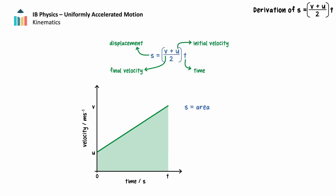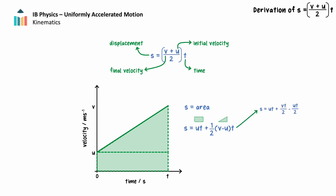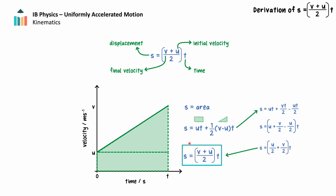For the graph shown here, the area can be divided into a rectangle and a triangle. The area of the rectangle will equal the initial velocity, u, multiplied by the time, t. The area of the triangle will equal one-half the change in velocity — the final velocity minus the initial velocity — multiplied by the time. The algebraic simplification yields the formula: s equals (v + u) / 2 times t.